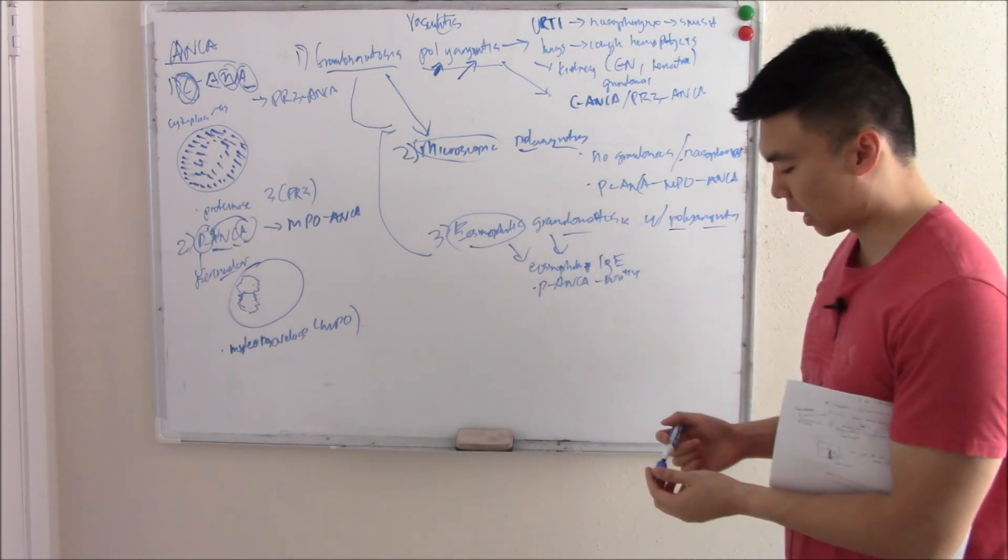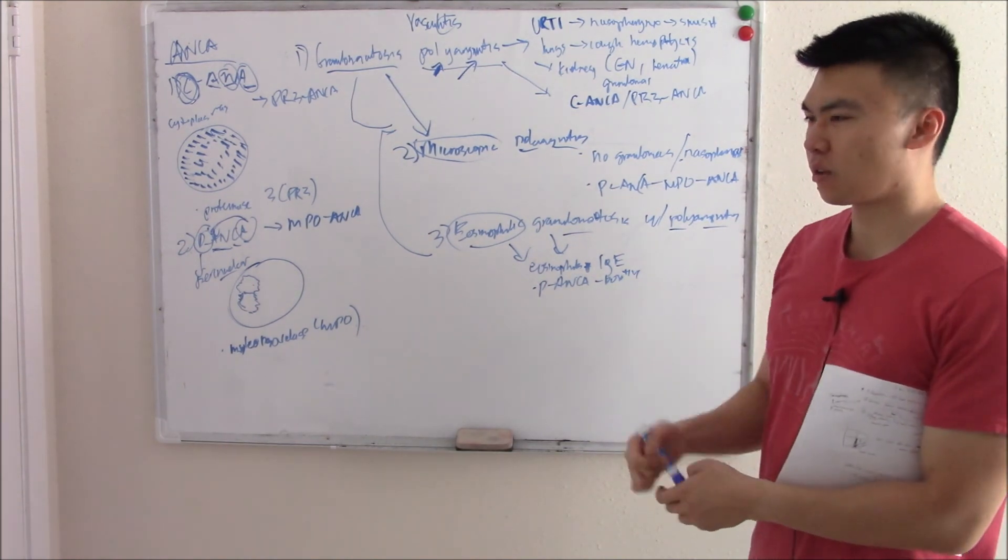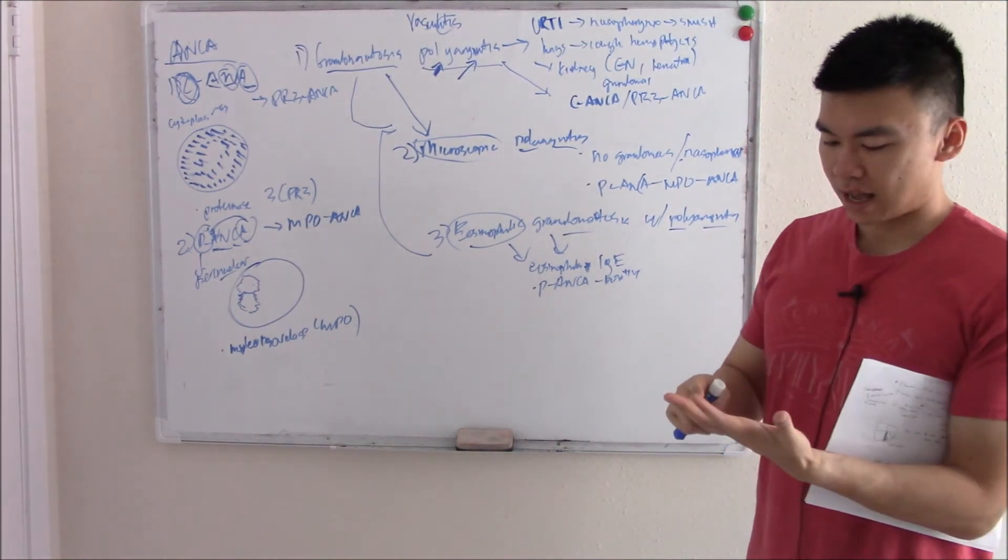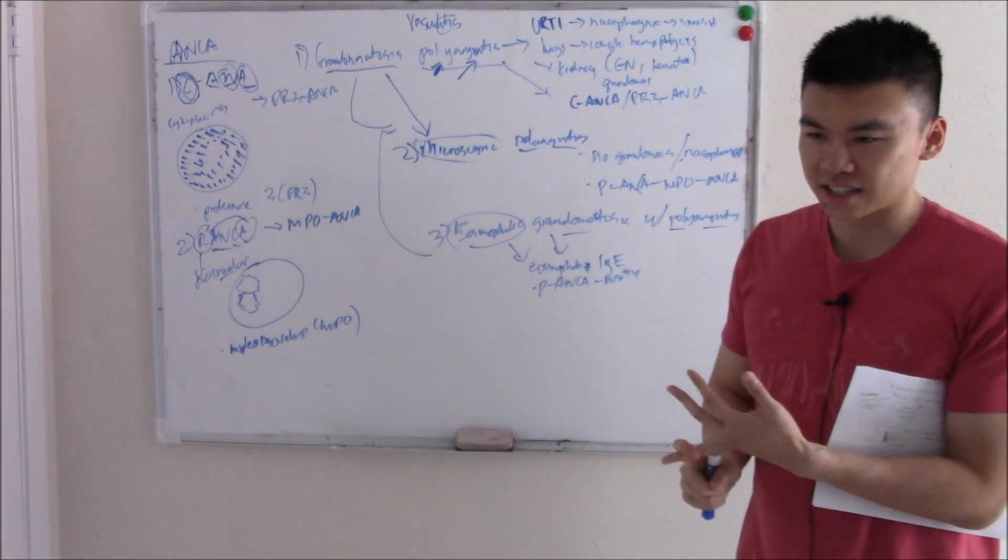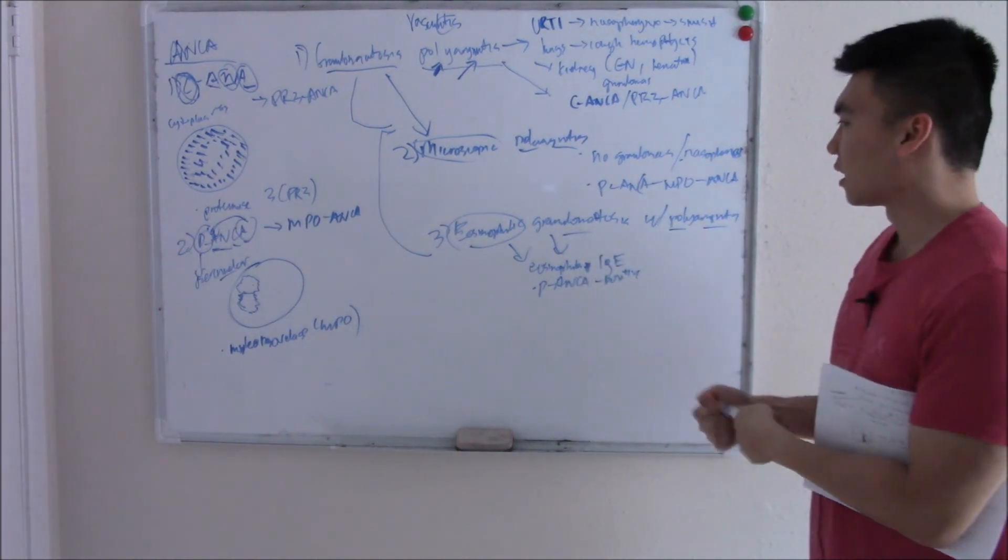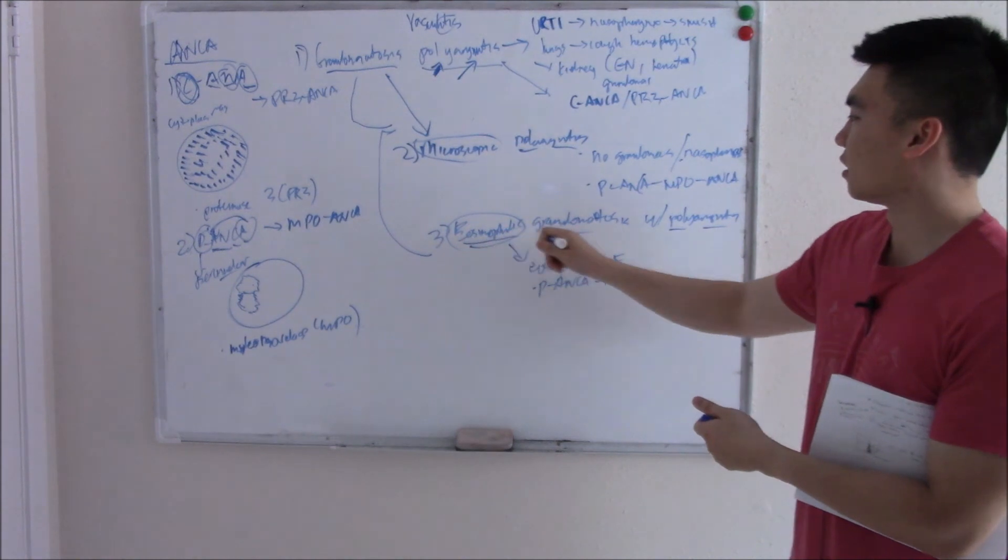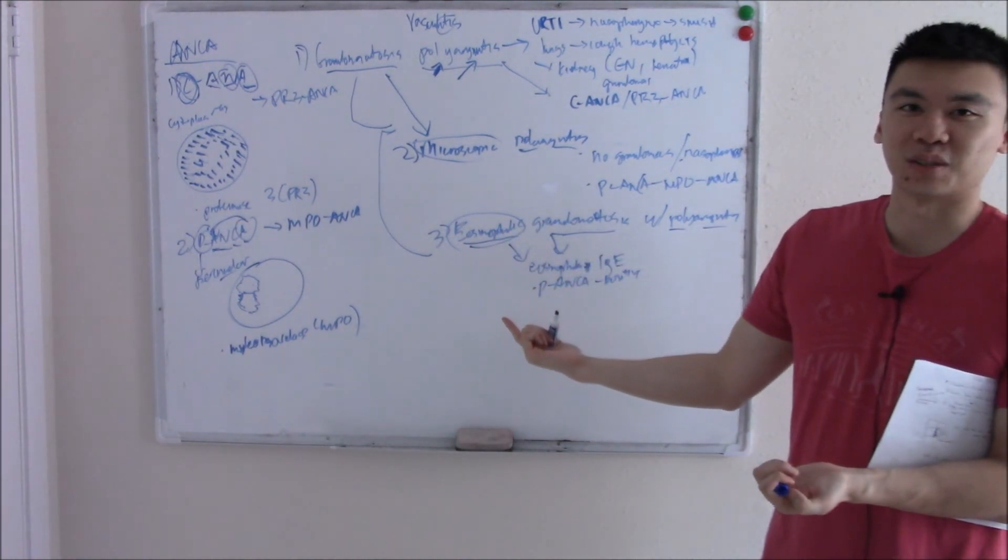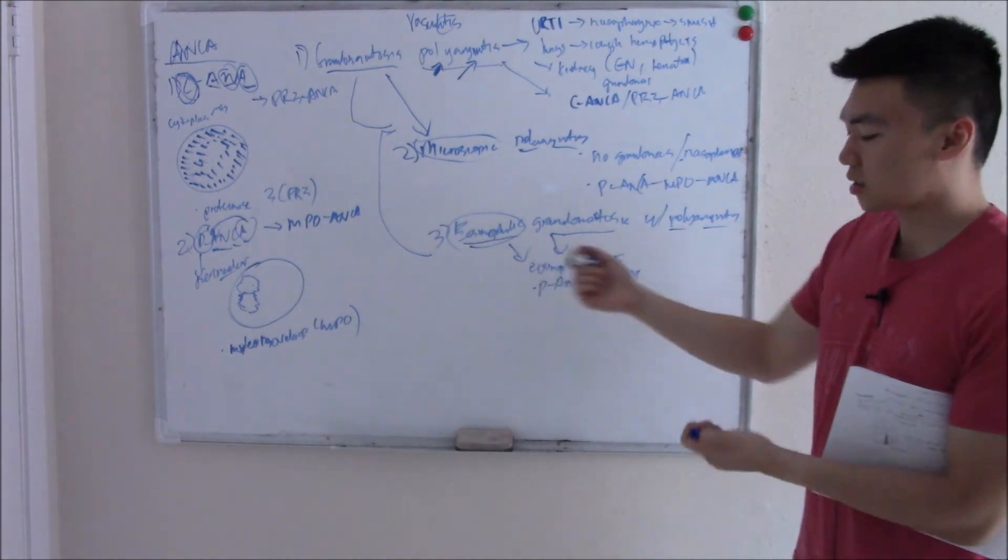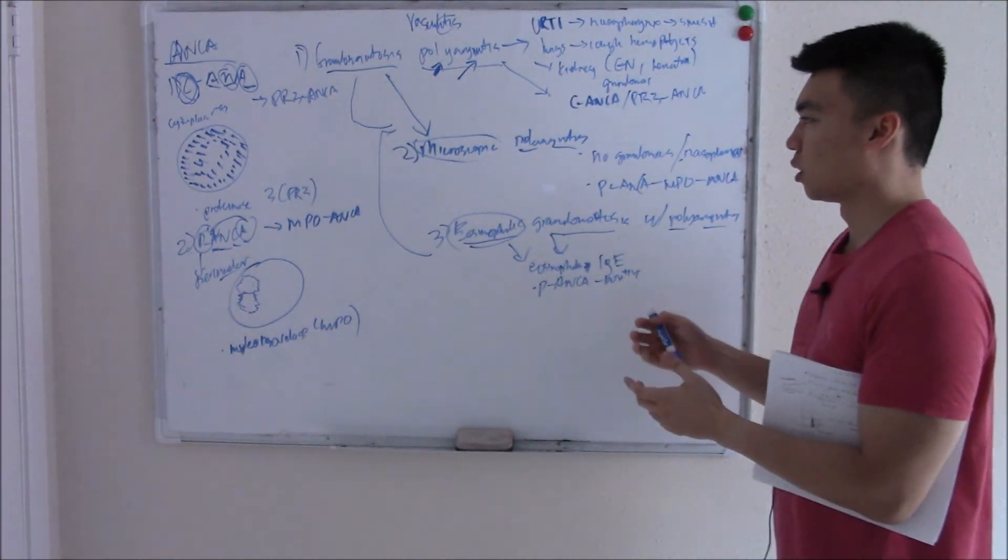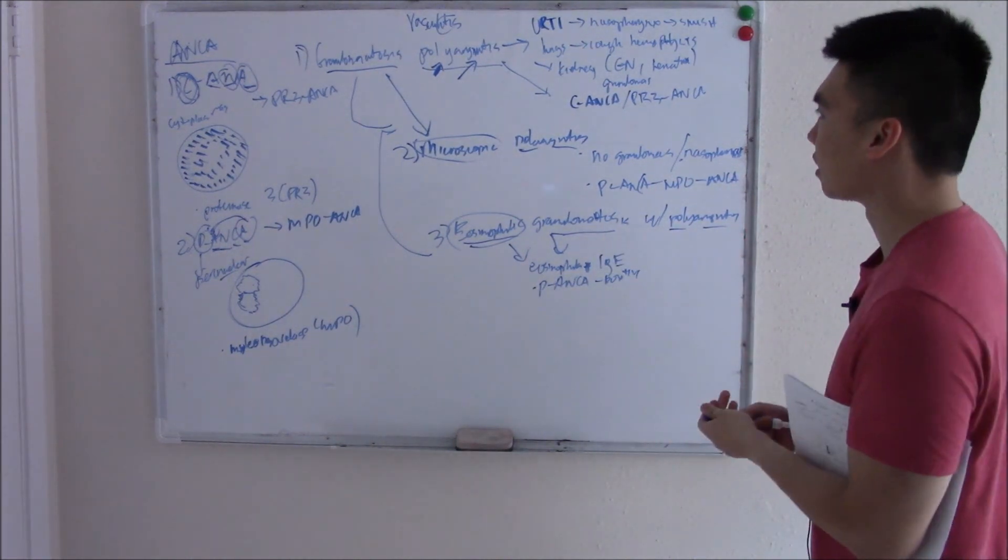Again, the name really gives it away. I've seen a question talking about all these different symptoms and signs, and the lab had eosinophils and IgE. I was like, what are they even talking about? And then I looked at the answer choice and saw a name that said eosinophilic granulomatosis with polyangiitis. I was like, that's gotta be the answer, just by the name alone. So just by the name alone you can get a lot of the answers right, as long as you don't just memorize the name but actually understand why they call it what they call it.